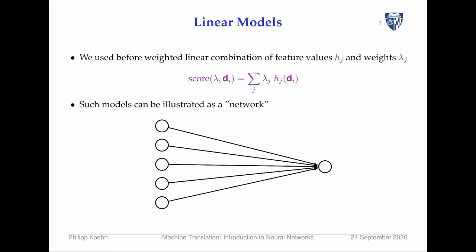We used before a weighted linear combination of feature values h_j with weights lambda_j. When we explained phrase-based machine translation, we said there's a language model, a translation model, a reordering model — these are probabilistic models. There are principled reasons to combine them, but you can also just view them as feature values with properties that we can weight appropriately. This gave us a formula with features and weights, and there are tuning algorithms for setting these weights.